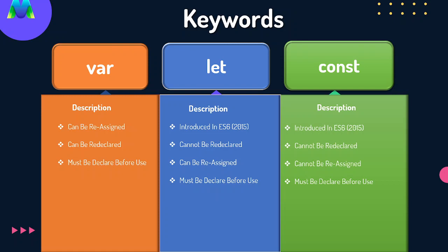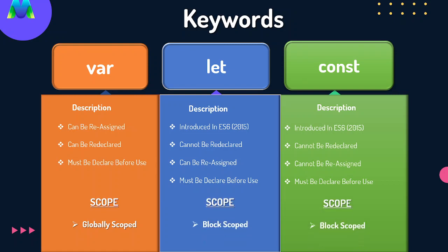The major differences are important for us. The var has global scope and function scope. The let and const have block scope and function scope.